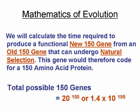Let us examine, mathematically, the time required for the development of a single gene that codes for a functional protein, which is the first step in order for the evolution process to be considered a viable theory. Let us assume that this gene contains 150 codons, each coding for an amino acid, thus forming a small protein of 150 amino acids for a bacterial species.